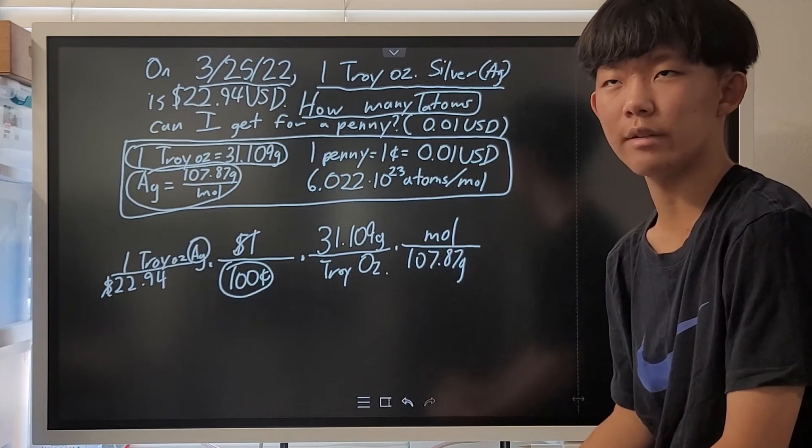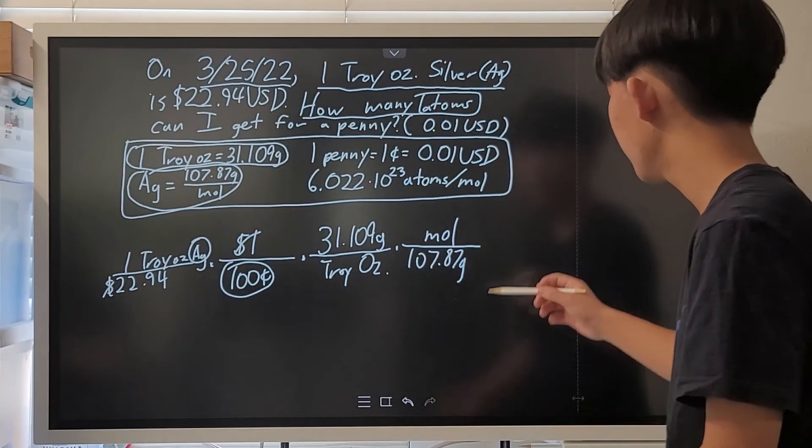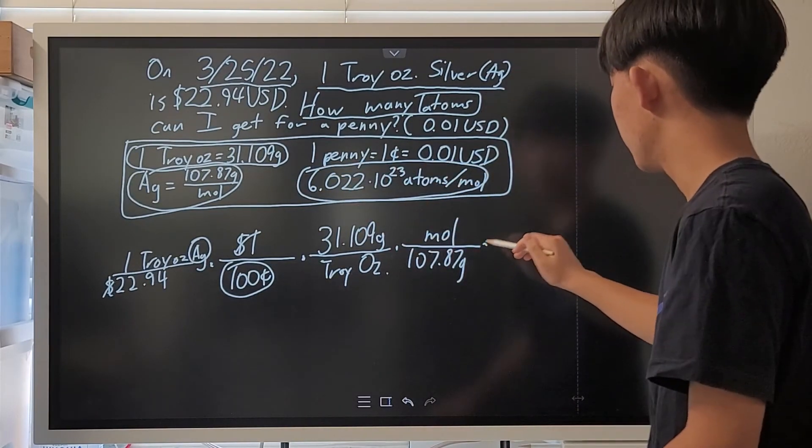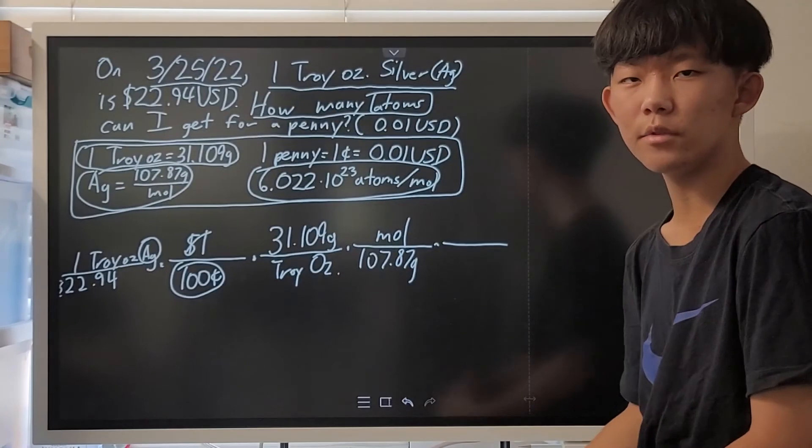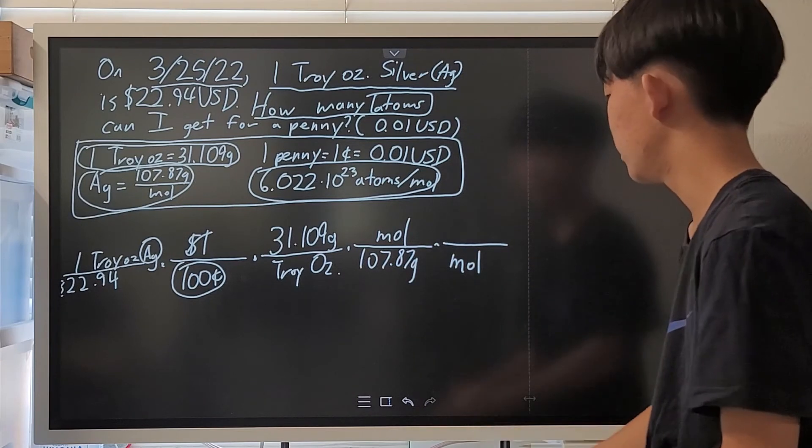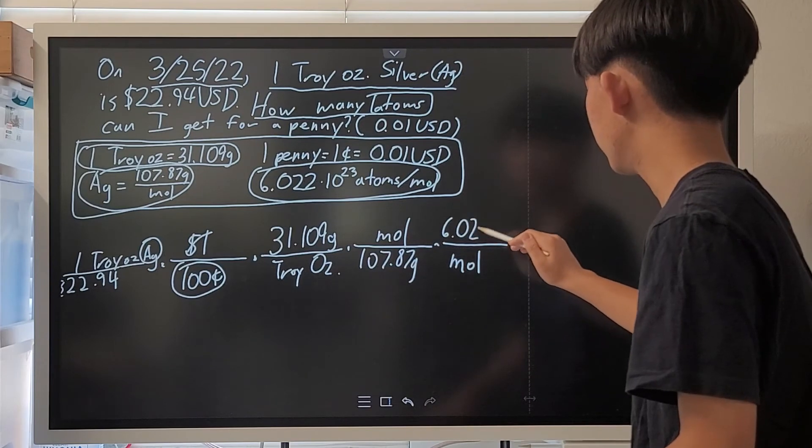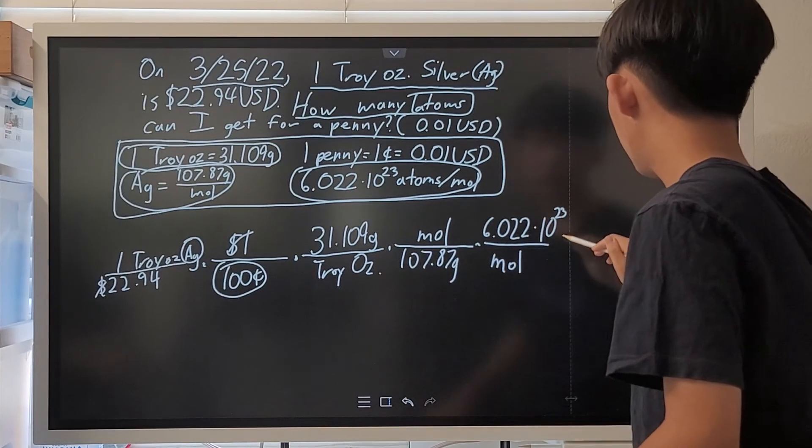So, now we've gone from troy ounces to moles. And we're only one step away from getting to atoms. All we have to do is use Avogadro's constant to convert from moles to atoms. Since moles are in the numerator, I'm pretty sure you guys can guess right now that moles should be in the denominator for them to cancel out.